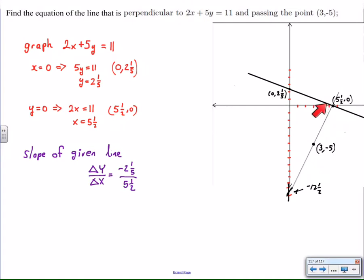And for fraction busters, just multiply top and bottom by 10. This gives us -22 and then 5 and 1/2 times 10 is going to be 55, which is -2/5. So the slope of the given line is -2/5.